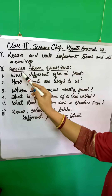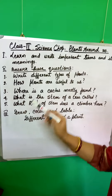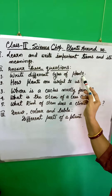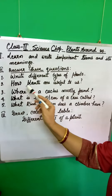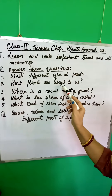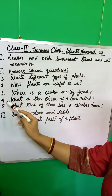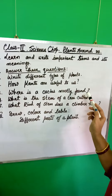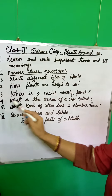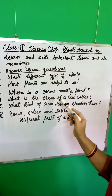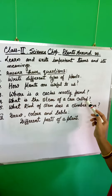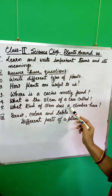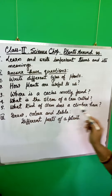Number 2: Answer these questions. Question 1: Write different types of plants. Question 2: How are plants useful to us? Question 3: Where is a cactus mostly found? Question 4: What is the stem of a tree called? Question 5: What kind of stem does a climber have?